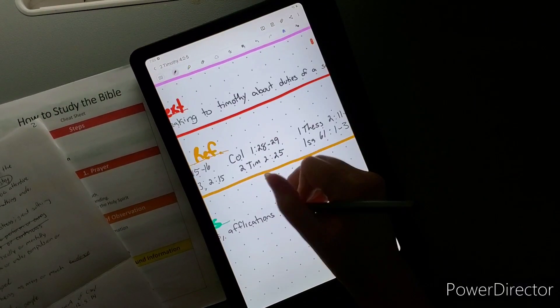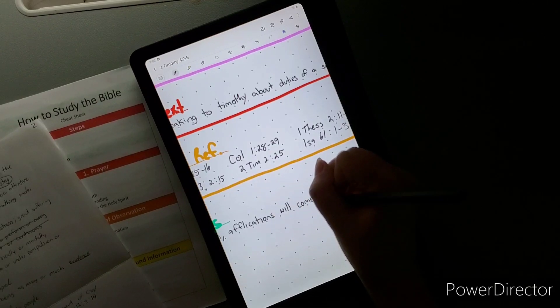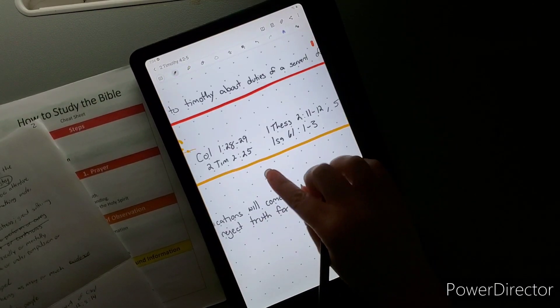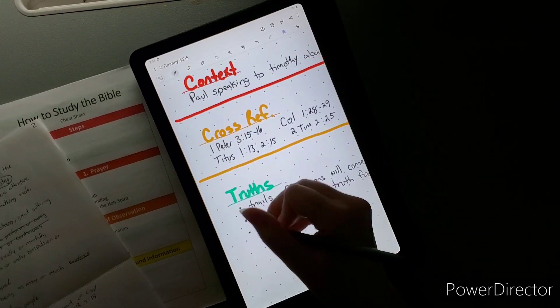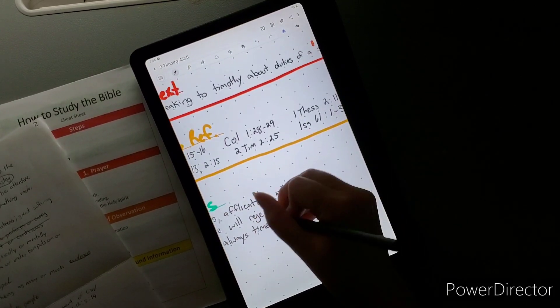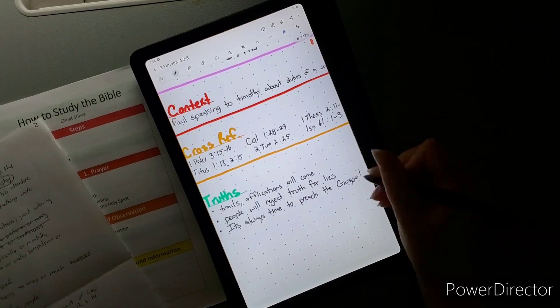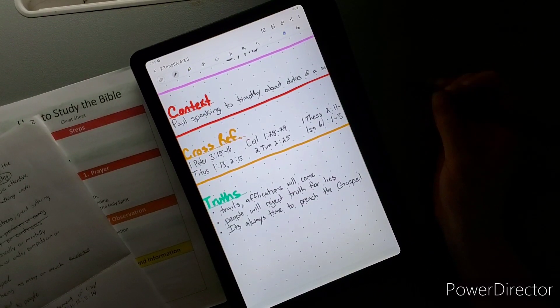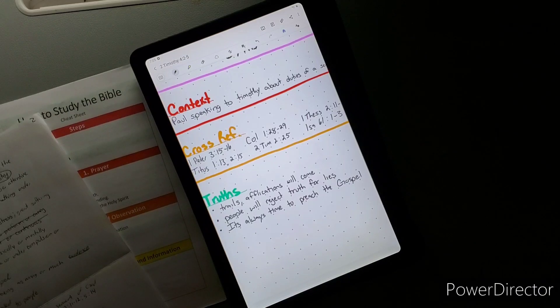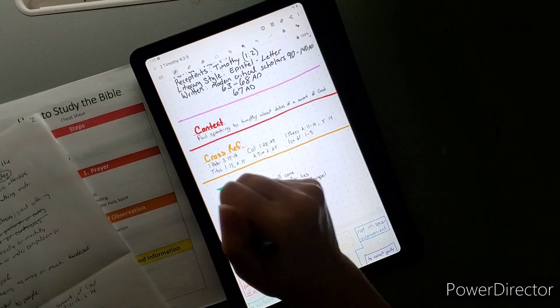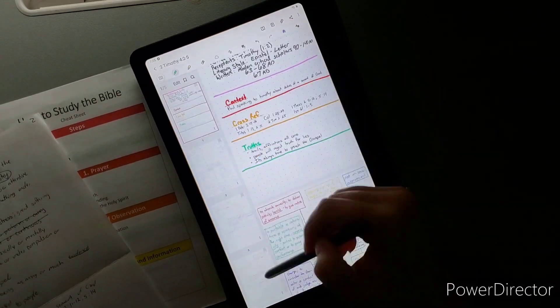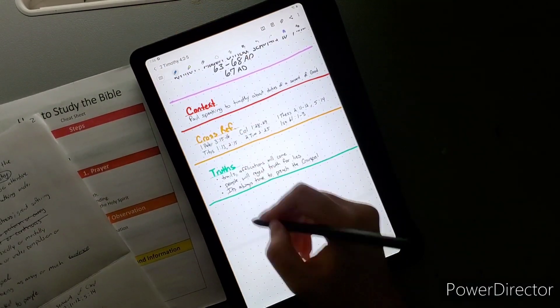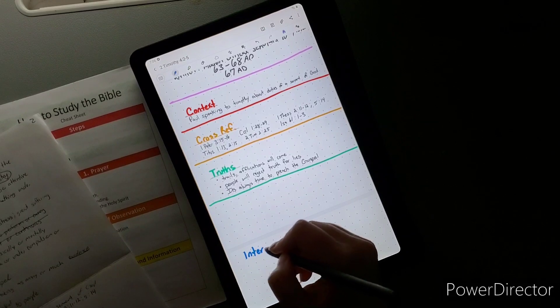Let's jump into truths that I got out of this scripture. Trials, afflictions and hardships are going to come. You're going to have to go through them. People will reject logic and truth for lies. You can see that even today. People don't care. They don't care about truth. They care about how they feel more than truth. And there's always work to be done. Those are the truths that I got out of the scripture.